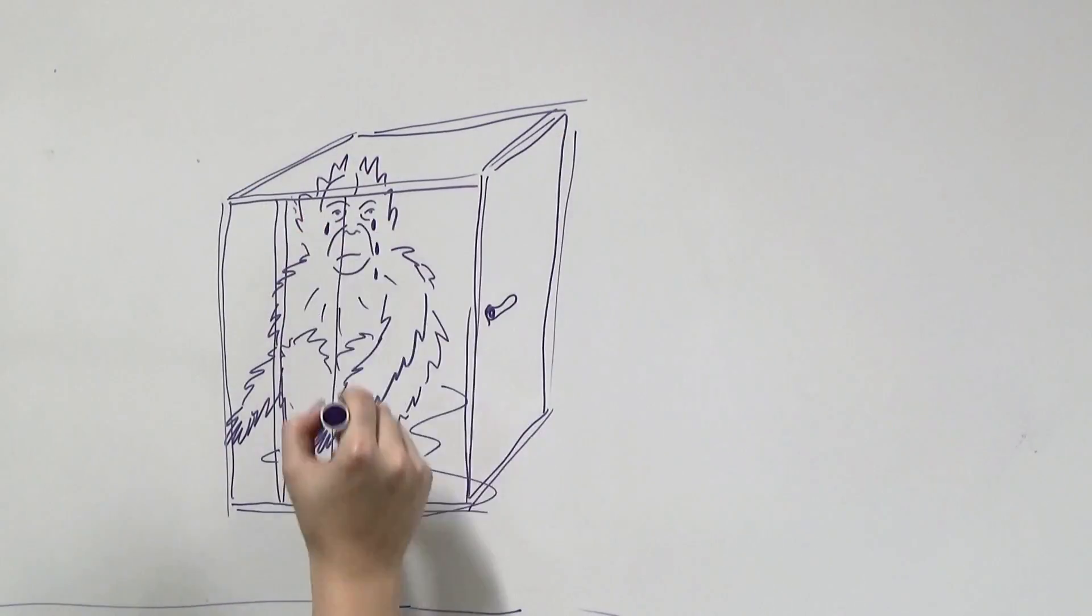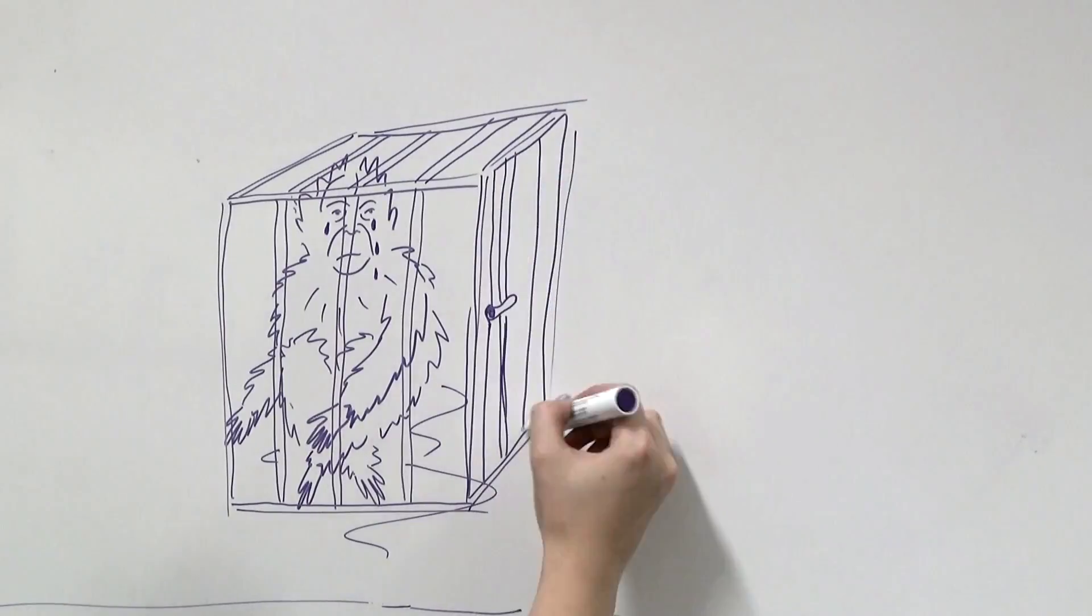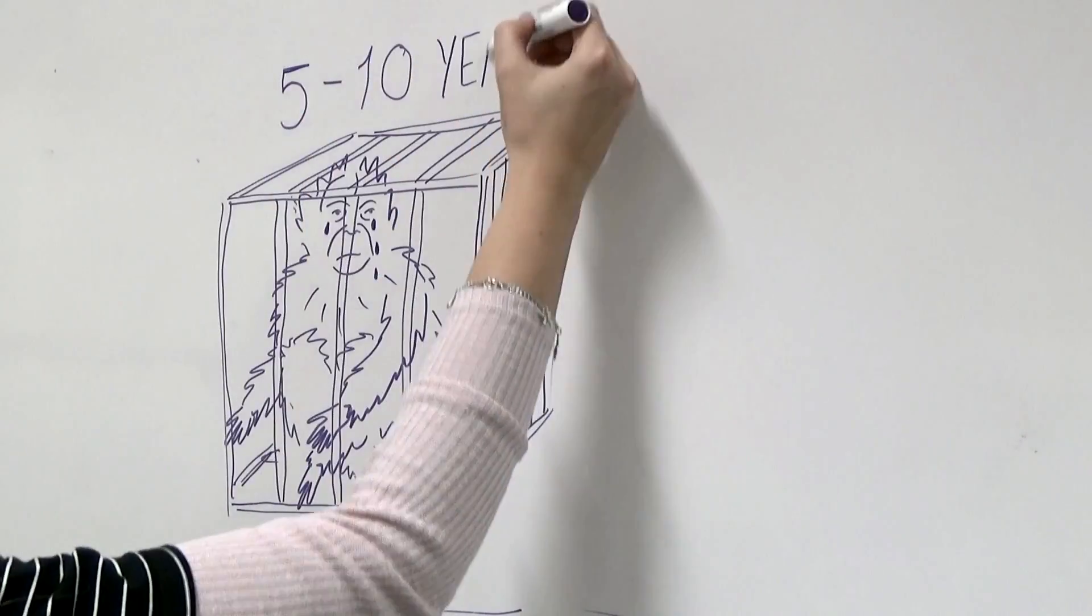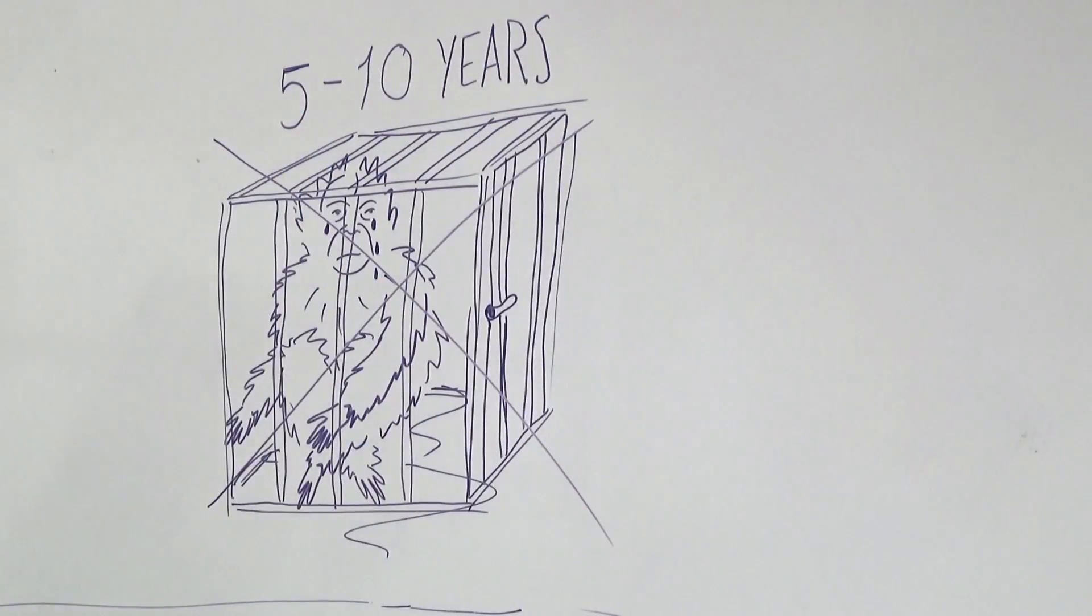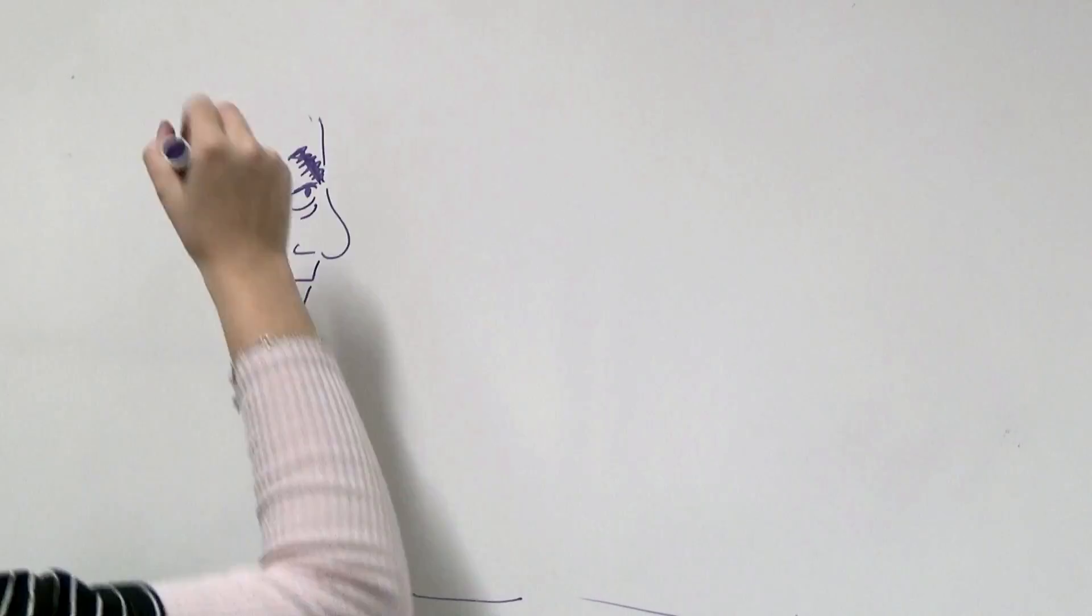Conservationists are working hard to help all the orangutans displaced by deforestation, by capturing them and moving them to areas of protected rainforest. However, this is hard and dangerous work, but when successful can make all the difference. Native inhabitants are affected by the production of palm oil.